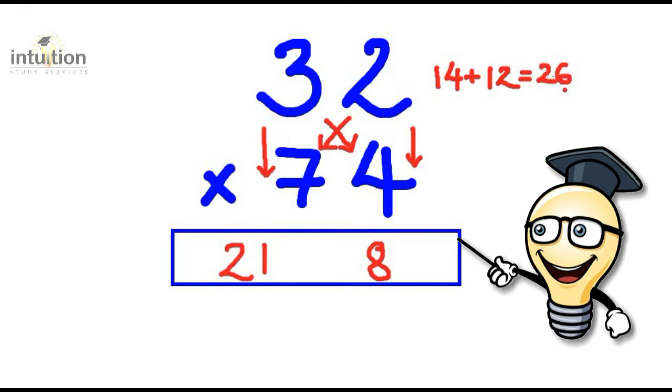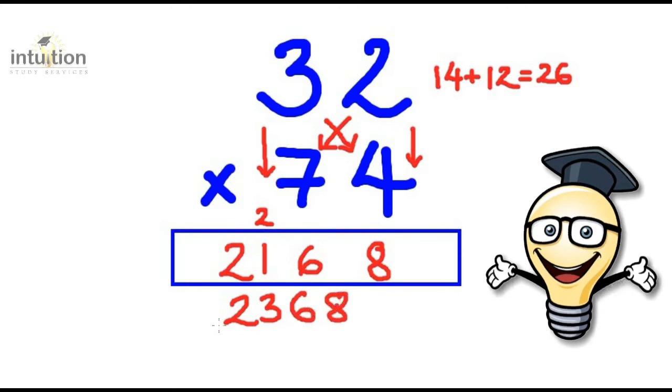Now we have a 2-digit number here. So what we want to do is we want to put the 6 here, and we want to carry the 2 here. Now we can put the 2 either at the top or we can even put it at the bottom as well. Again, this is personal preference. It's just to show that this number is being carried. Okay. Now finally, what we need to do here is to get the final answer. We need to add this 2 to this 21. So that gives us 23. So the final answer is 2,368.